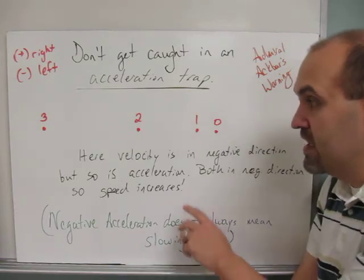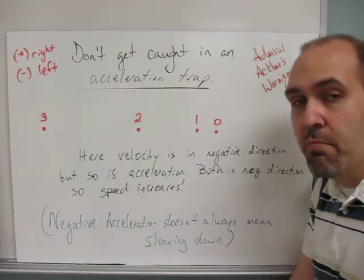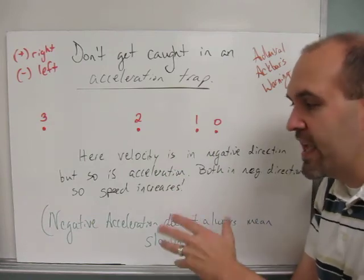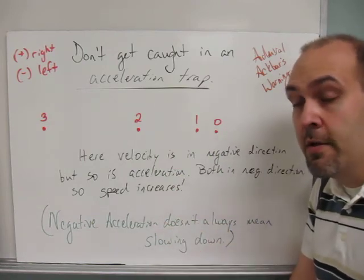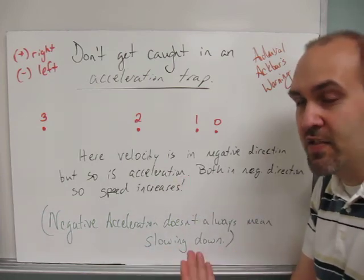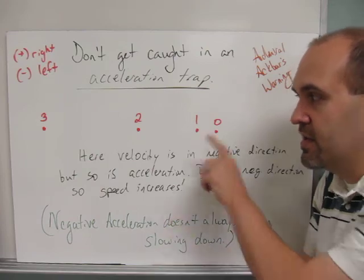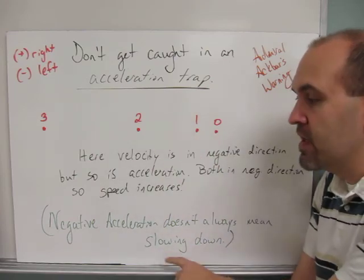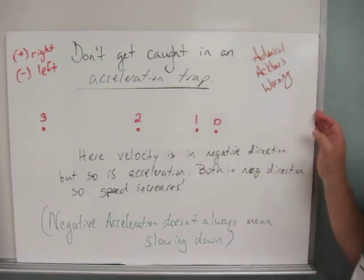So here we have an example of a negative acceleration that is to the left. But in this case, it's increasing speed. So many students get caught in this trap, and they think negative acceleration means slowing down. But that's only true if the velocity is positive and the acceleration is negative. Then that's slowing down. But if they're in the same direction, negative, negative, left and left, then that means speeding up. Thanks.